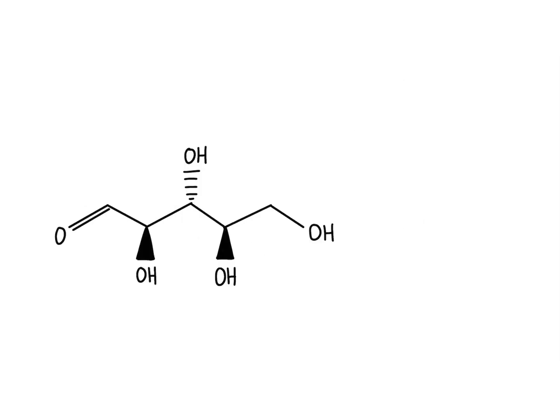So this is a more complicated problem, but in principle we are still doing the same things over and over again. I will start from the beginning, marking the carbons 1, 2, 3, 4, and 5. Carbon number 1 has two hydrogens and carbon number 5 has one hydrogen. Because there are no wedges or dashes, we can just write CH2OH.